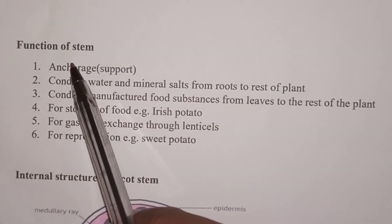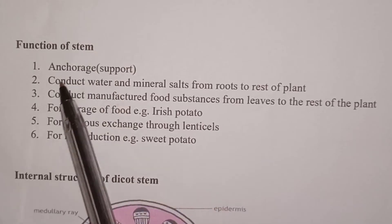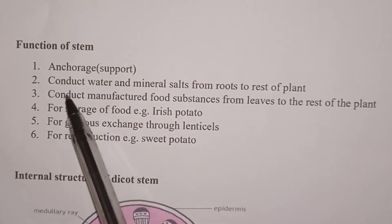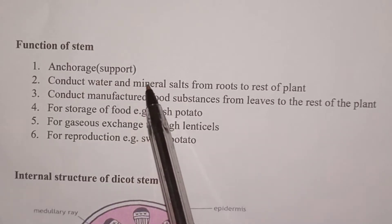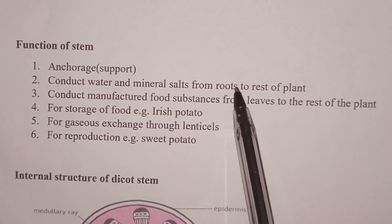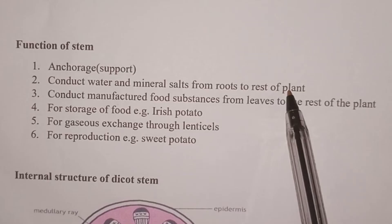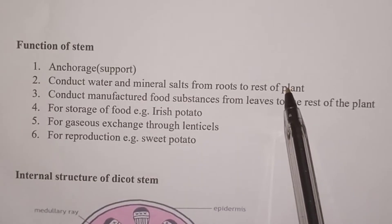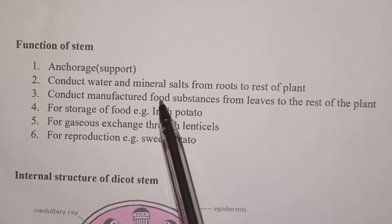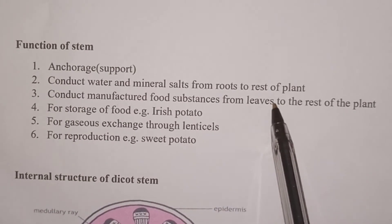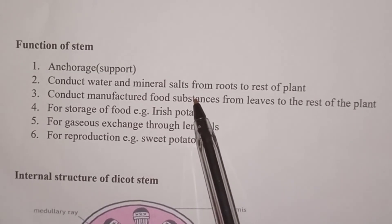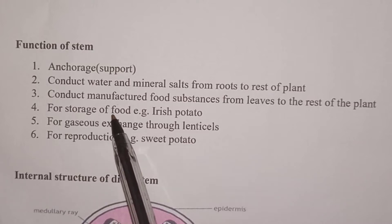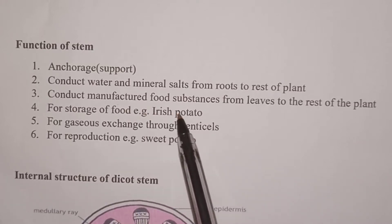To start with, functions of the stem. Number one, it is used for anchorage — anchorage means it supports the plant. Number two, it conducts water and mineral salts from the roots to the rest of the plant, and this is done within the xylem in the stem. Number three, it conducts manufactured food substances from the leaves to the rest of the plant — within the stem, the phloem performs that function.